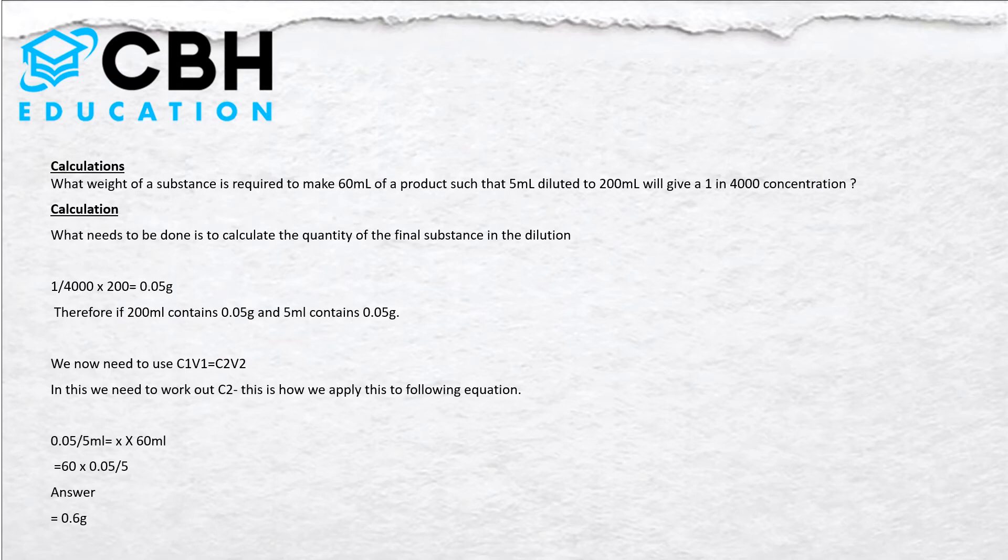We've got 1 in 4000, which is 1 gram in 4000 ml. We need to work out the amount of grams in 200 ml. That's 1 divided by 4000 times 200, which gives us 0.05 grams. Therefore, 5 ml contains 0.05 grams.